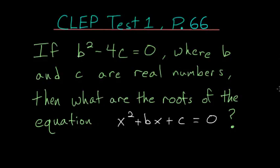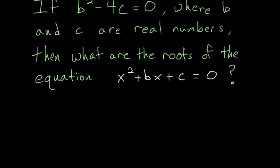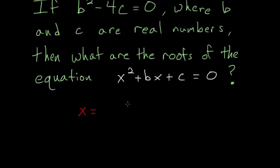With this problem, to find its roots, we can use the quadratic formula. So we know that x is equal to minus b, the coefficient on x, plus or minus the square root of this coefficient b squared minus 4 times the coefficient